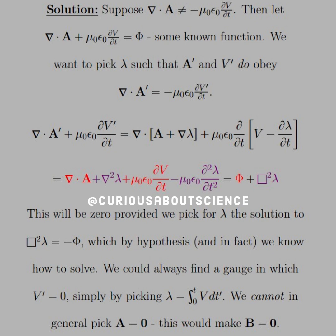Since box squared lambda equals negative phi is the inhomogeneous wave equation. So that's where we get all this technical stuff. We could always find a gauge in which V prime is zero, simply by picking lambda equal to the integral from zero to t of V dt prime.